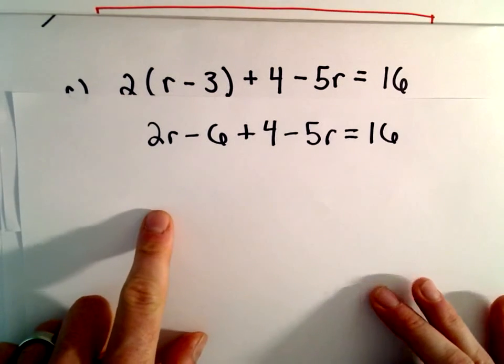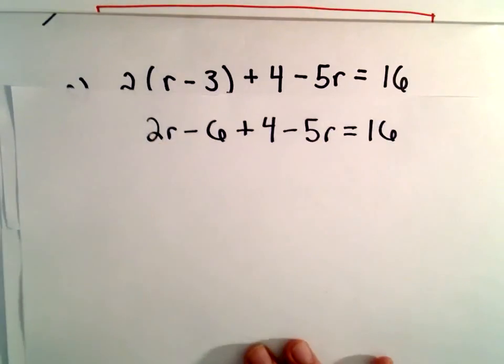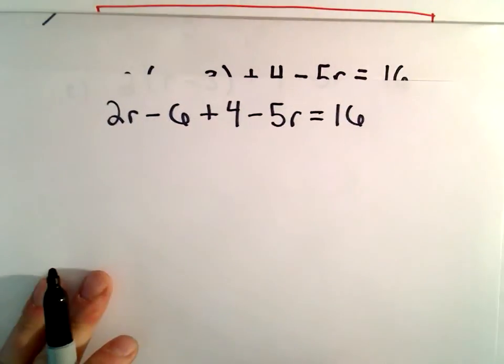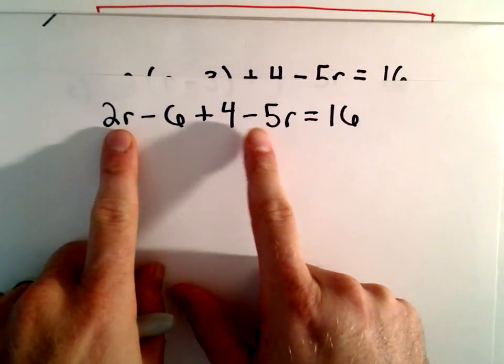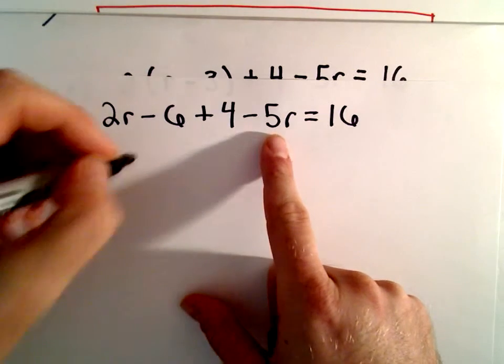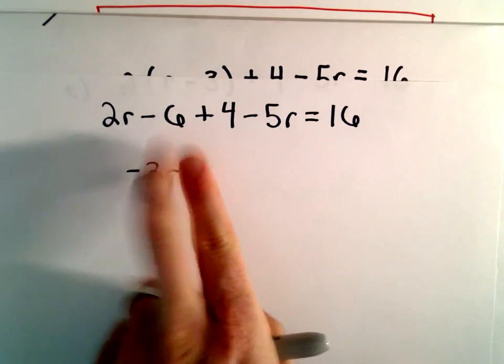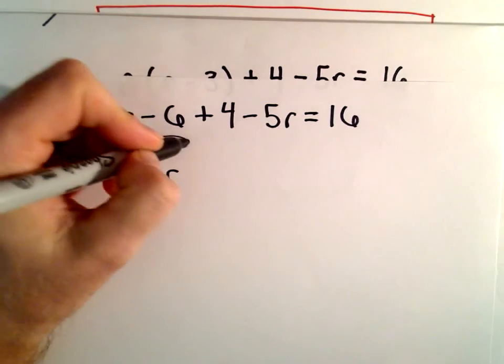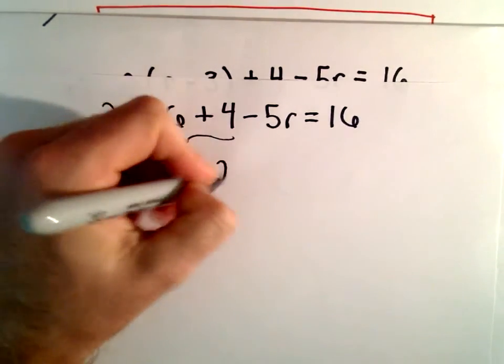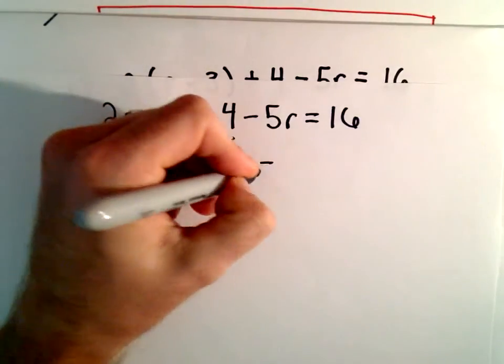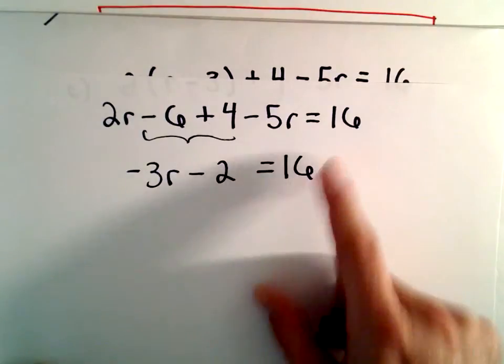And now I'm going to combine like terms. So I see a term involving r and a term involving r. What I'm going to do is just take the coefficients. So we have a 2 and a negative 5. So 2r minus 5r will be negative 3r. And then we have constants. We have our negative 6 plus 4. Well, negative 6 plus 4 will give us negative 2. Again, I'm going to leave the 16 on the right side. Nothing really to do with it for the moment.